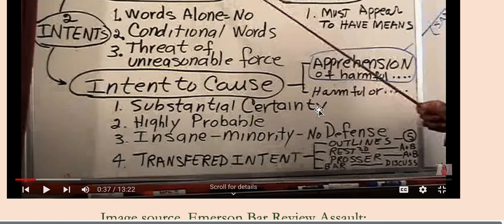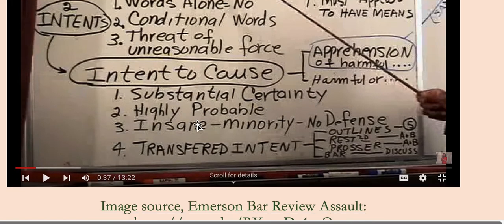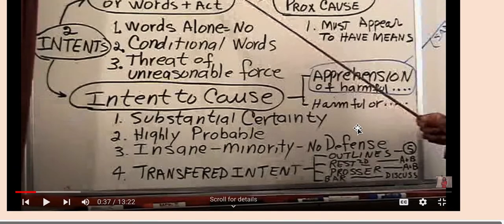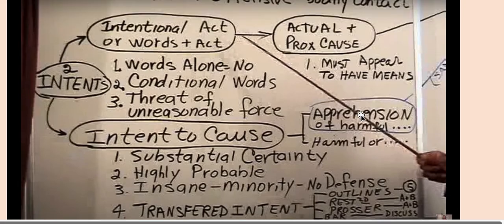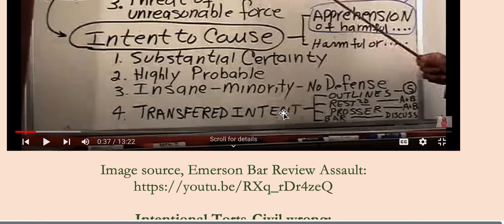Now, Intent to Cause. Substantial Certainty — here are some key words: Highly Probable, Insane, Minority, No Defenses, and Transferred Intent. He talks about different references: Prosser, Restatement Second, and some outlines. But if you look at Apprehension of Harmful or Offensive Touching, you then have to appear to have the means for the causation.